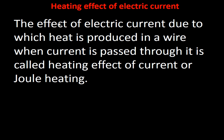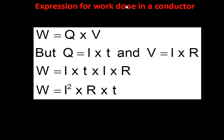The heating effect of electric current: when a mobile phone is used for a long time connected to electricity, it heats up — this is because it offers resistance. When current passes through a material with resistance, heat is produced — this is called the heating effect of electric current, also known as Joule's heating or Joule's law of heating. The formula is H = I²Rt, where H is heat energy.